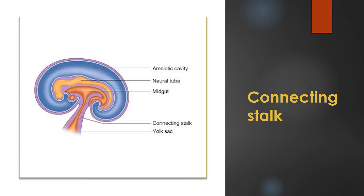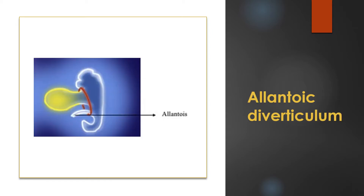Now we will see the connecting stalk. This connecting stalk also comes towards the anterior, and this connecting stalk in future is going to form the umbilical cord. What will happen in the allantoic part is the proximal part of the allantois is attached to the hindgut itself, whereas the distal part will regress and persist as the urachus — meaning it is attached to the urinary bladder as a remnant.